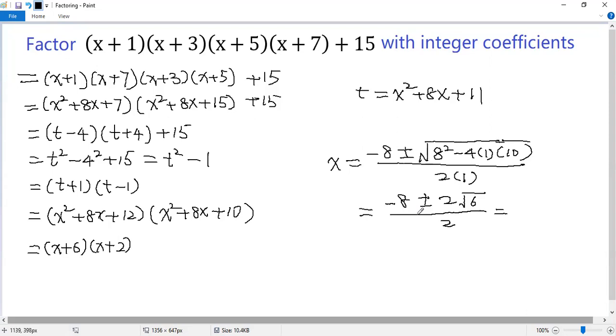Because we cannot get integer coefficients, we cannot do further factoring for the second factor with integer coefficients. So we can only write x squared plus 8x plus 10. That is the final answer.